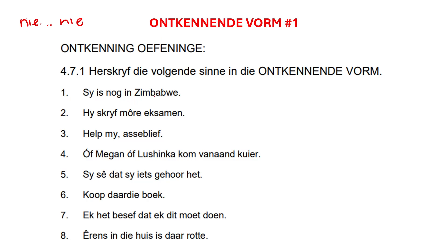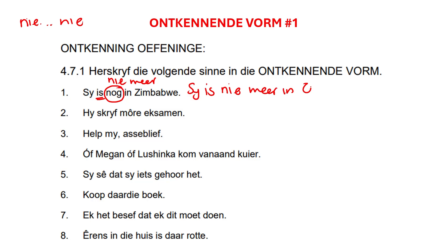Hy is nog in Zimbabwe. I always say look for the verb, because after the verb your 'nie' comes. Our verb here is 'is', so we already know that 'nie' will come after 'is'. You can write: Hy is nie. But you can't say 'Hy is nie nog' — that doesn't sound right. So 'nog' has to change to something. 'Nog' changes to 'nie meer'. So: Hy is nie meer in Zimbabwe nie.